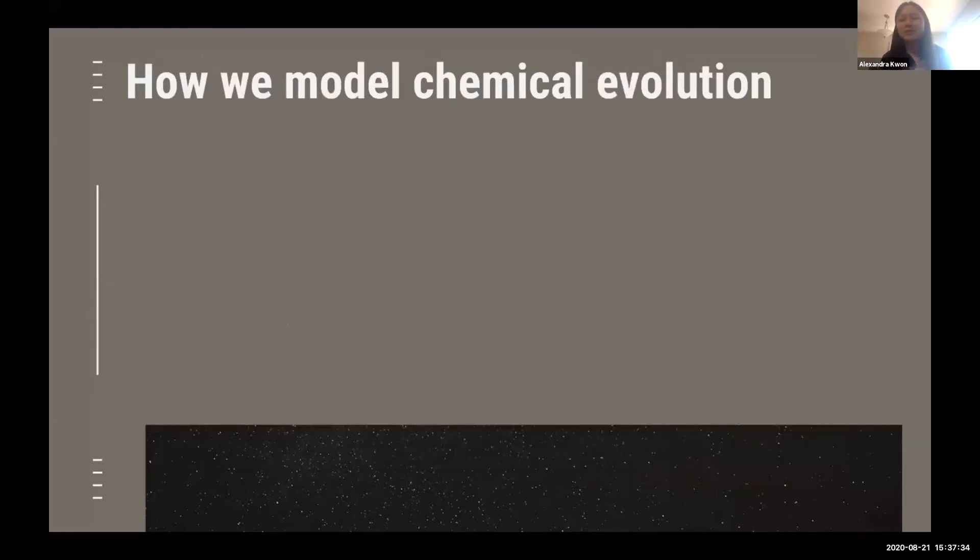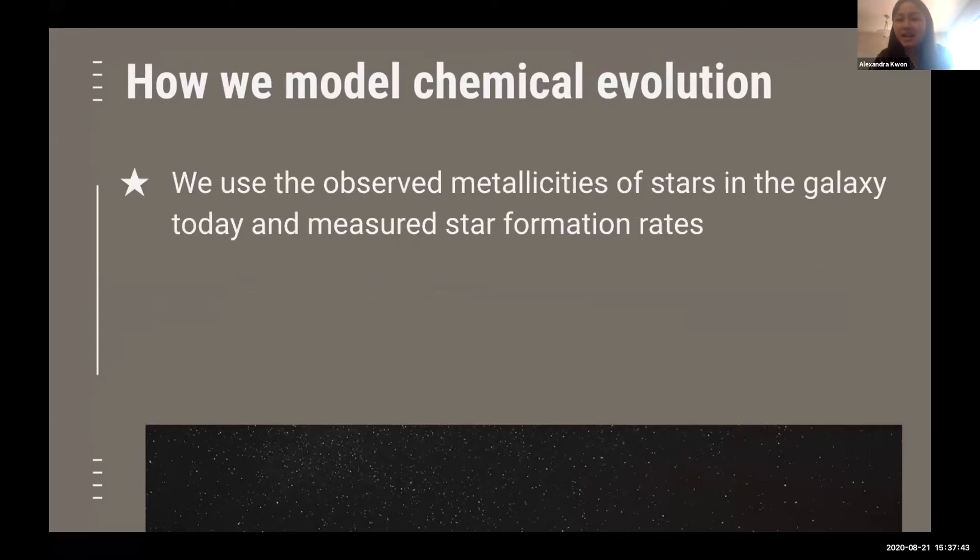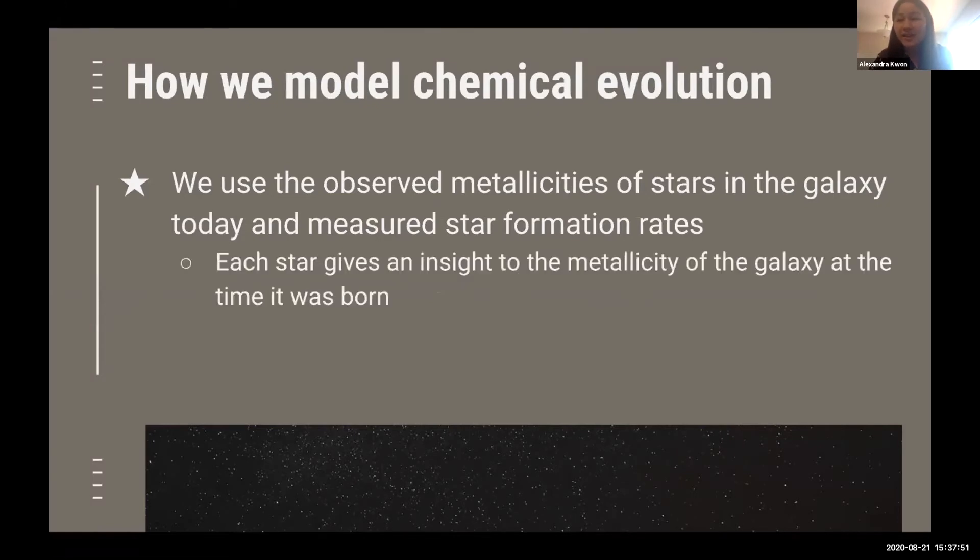So how do we plan on doing this? Obviously we can't go back in time and just look at the chemical evolution, so we have to use observable values that we can find today to infer information about the past. One of the main tools we have is the metallicities of the stars within the galaxy today. We can say that the metallicity of a star is somewhat representative of the metallicity of the entire galaxy at the time the star was formed, since the star was formed from the materials of the galaxy.